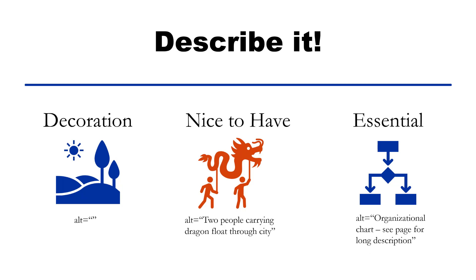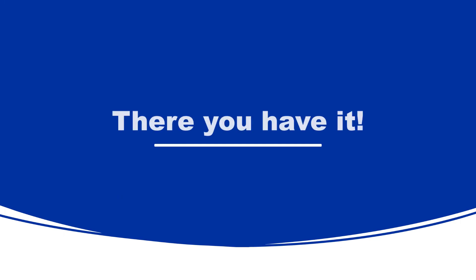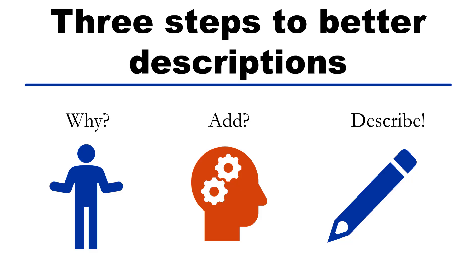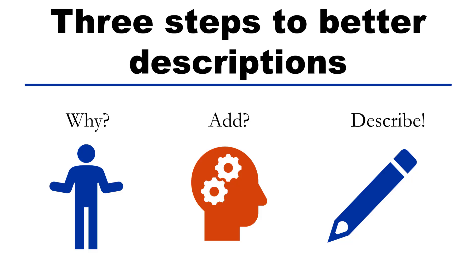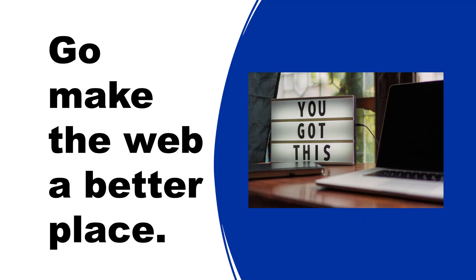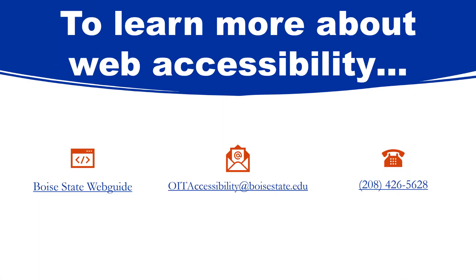For example: organizational chart — see page for long description. There you have it. Three steps to writing better image descriptions: understanding why you are using an image, what it adds to your content, and then describe it. Now go make the web a more accessible place, one image description at a time. To learn even more about web accessibility, visit us at Boise State Web Guide, email oitaccessibility@boisestate.edu, or call us at 208-426-5628.